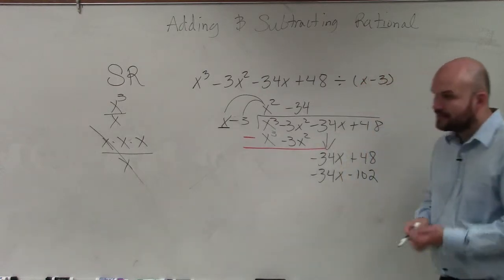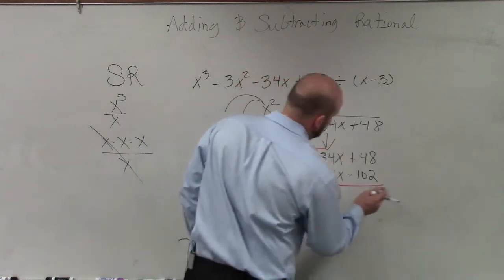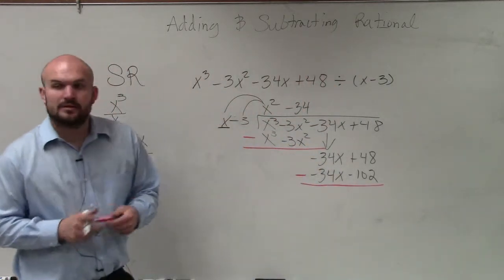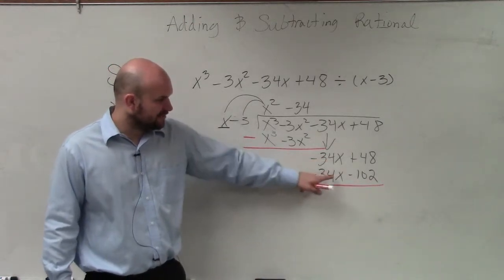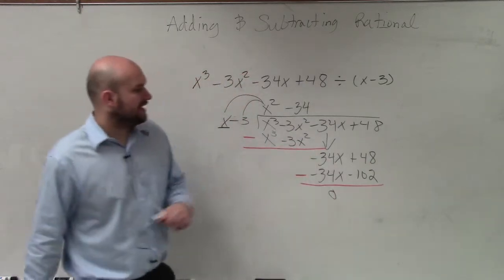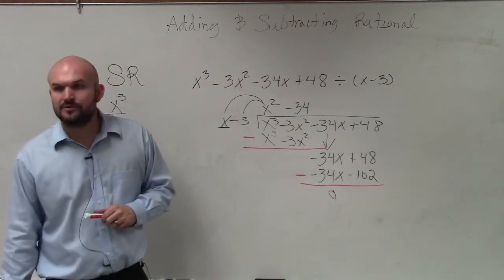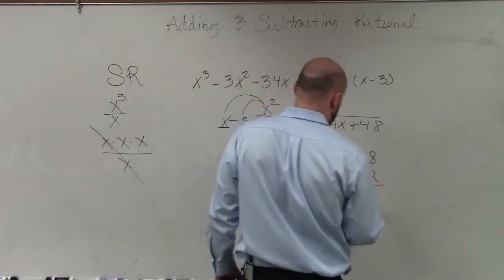Then again, I subtract my rows. Now, in this case here, what I have here is negative 34x minus a negative 34x is 0x. And then 48 minus 102 is going to be negative 54.